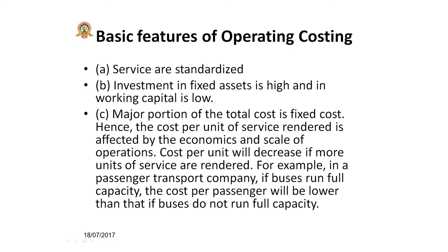Even in examples like a canteen or cinema hall, in all cases the service is standardized. Whether you are rich or poor, the service provided by the service provider is the same — there is no differentiation. If you go to a cinema hall to watch a movie, the service is the same for everyone. Similarly, a canteen runner provides the same service to students and lecturers alike. There is no differentiation, so the service is standardized in operating costing.